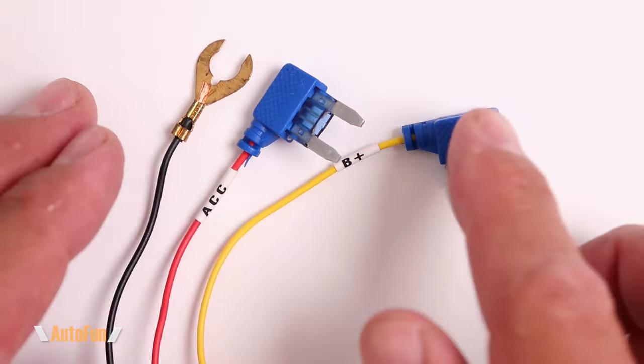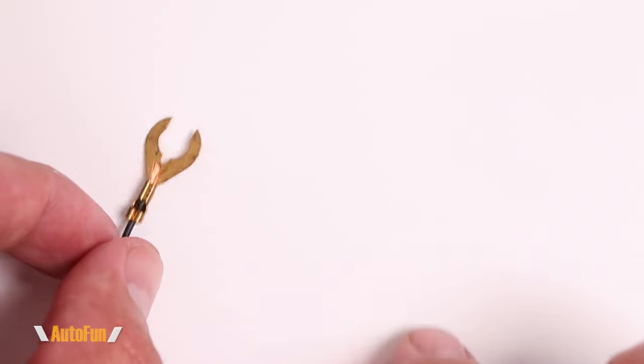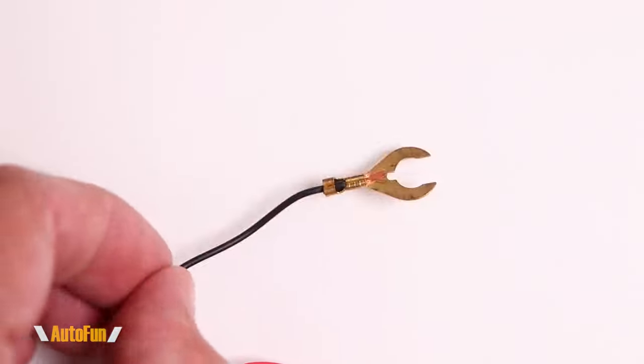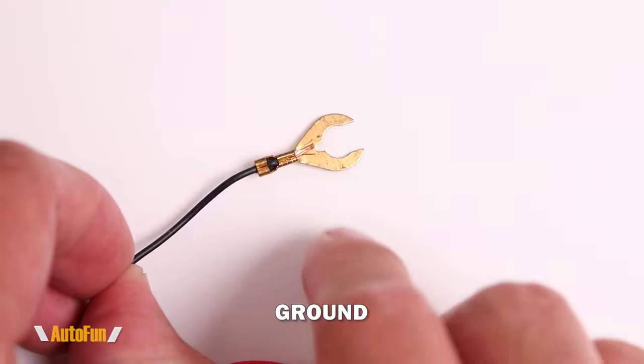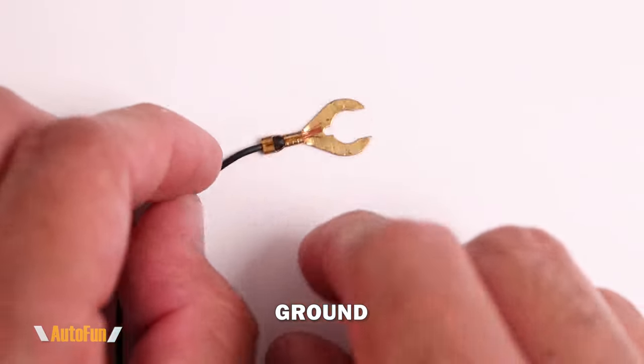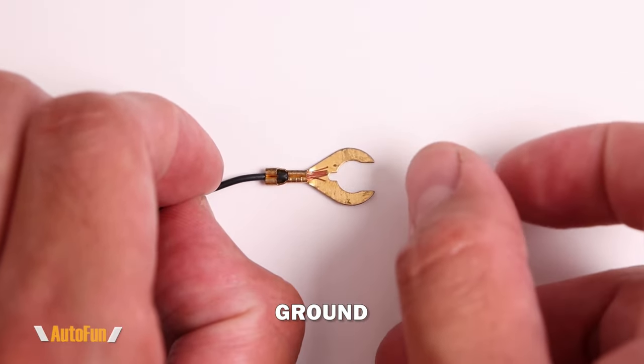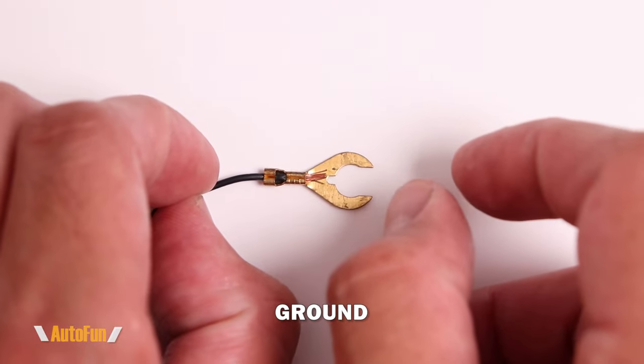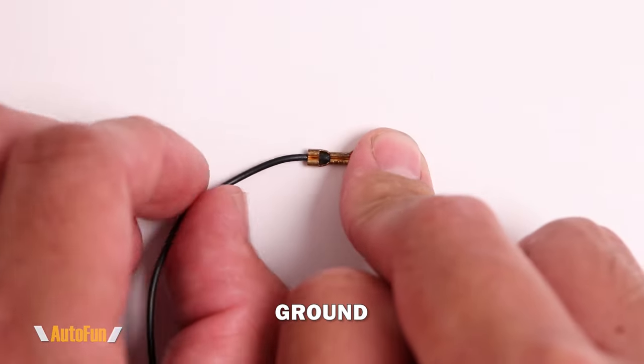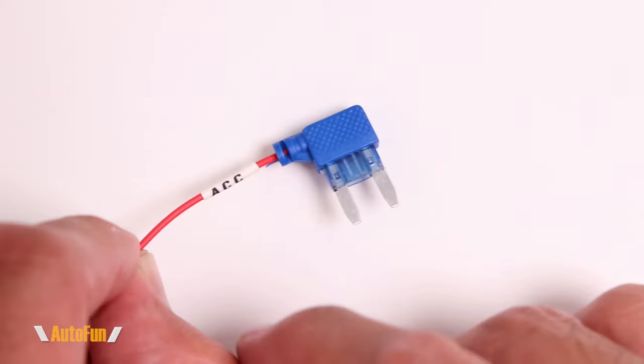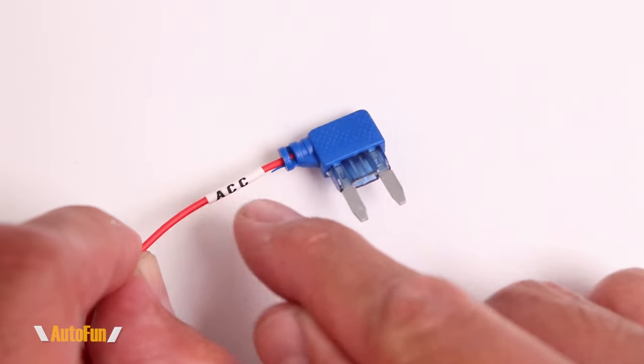Now let's talk about the end that goes to the fuse box, where we have three wires. The first wire is going to go to ground, which is normally a metallic portion of the body of the vehicle. Normally I find a bolt where I can see some metal, pull the bolt out a little bit, insert this underneath the bolt and retighten the bolt, giving me good ground.